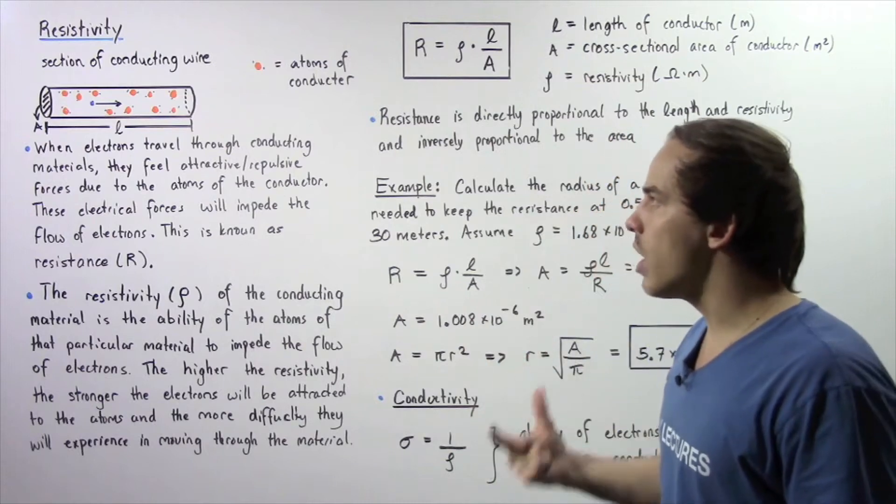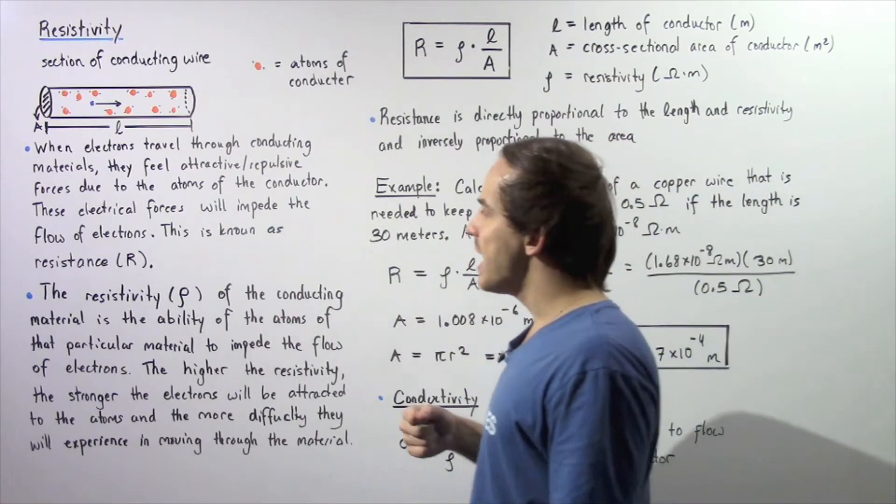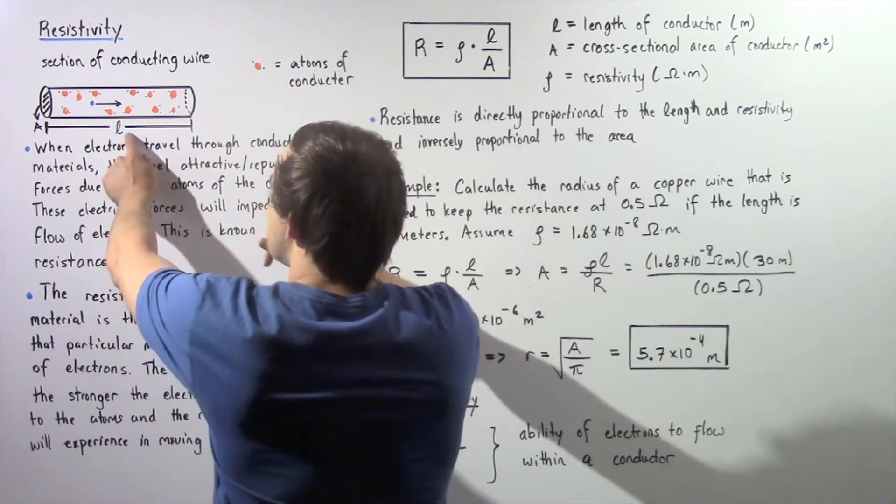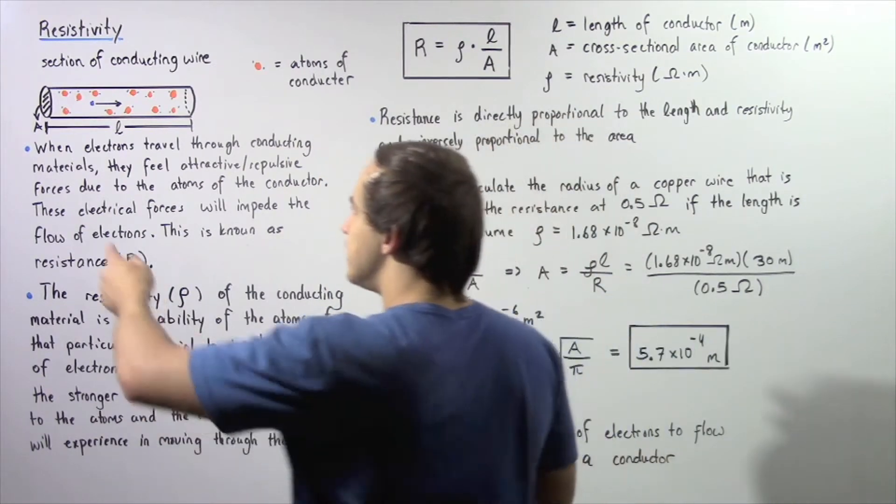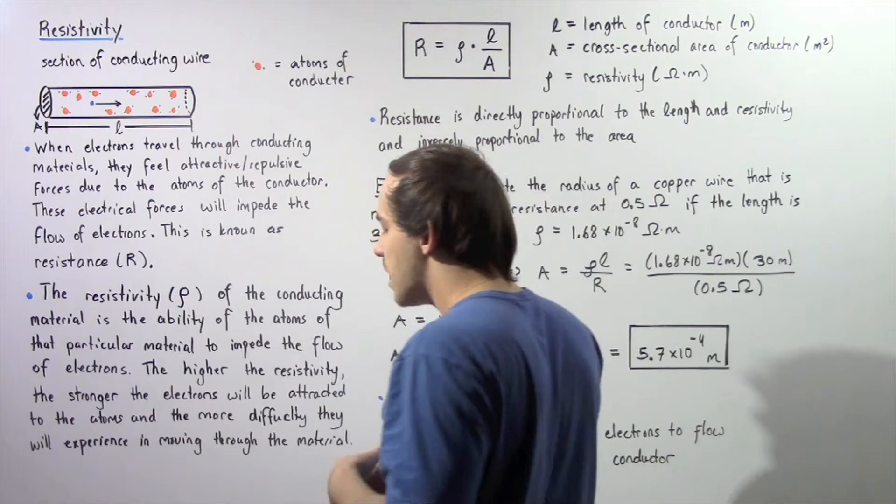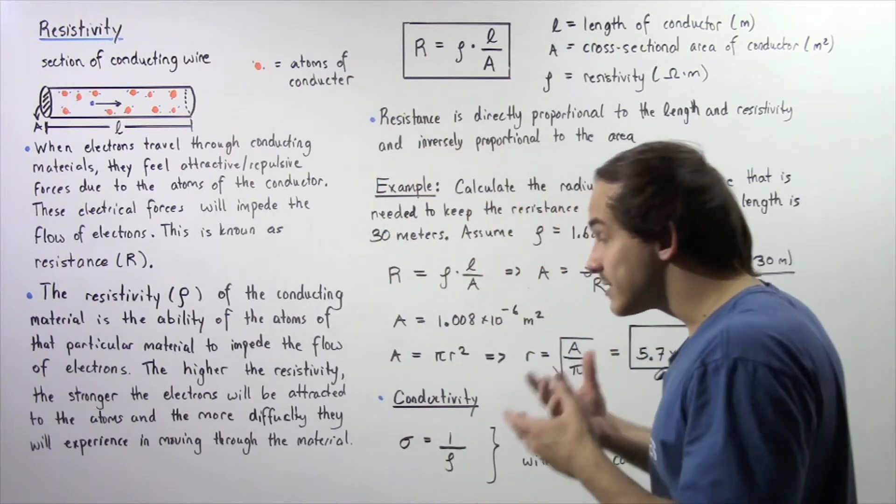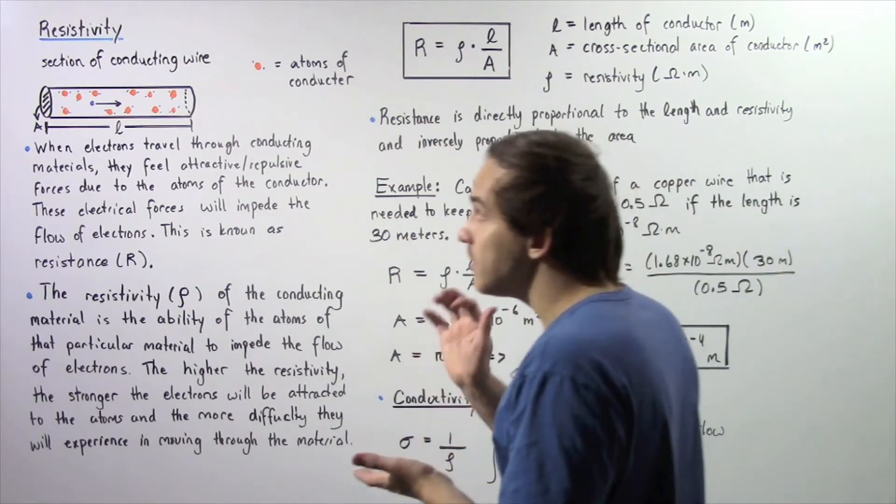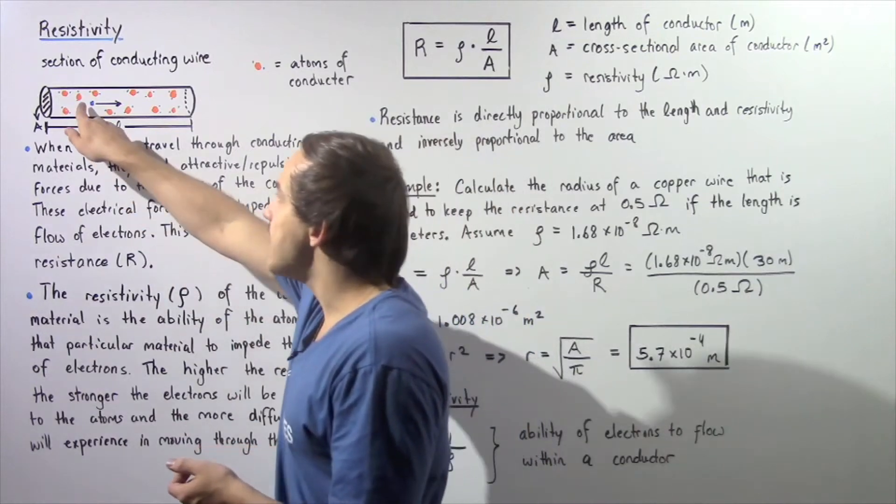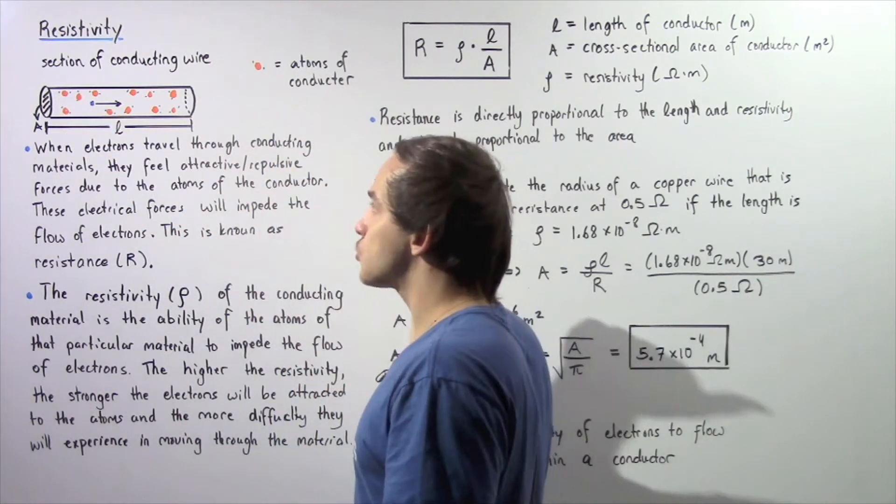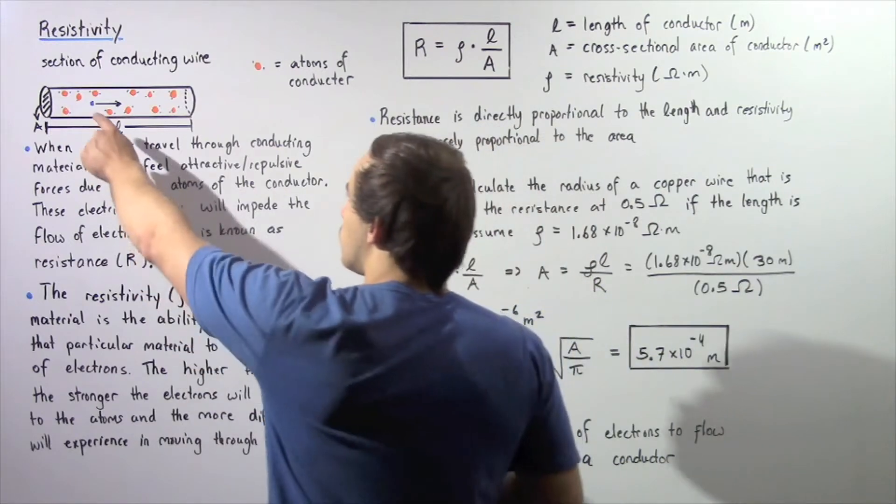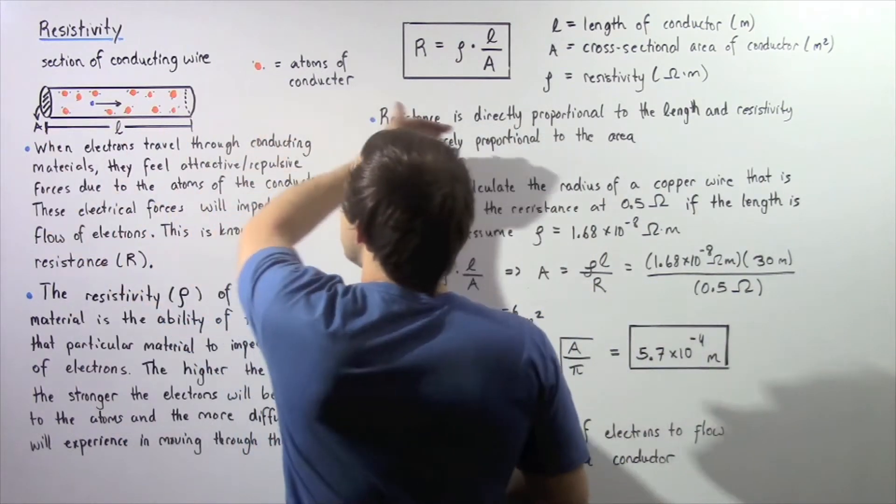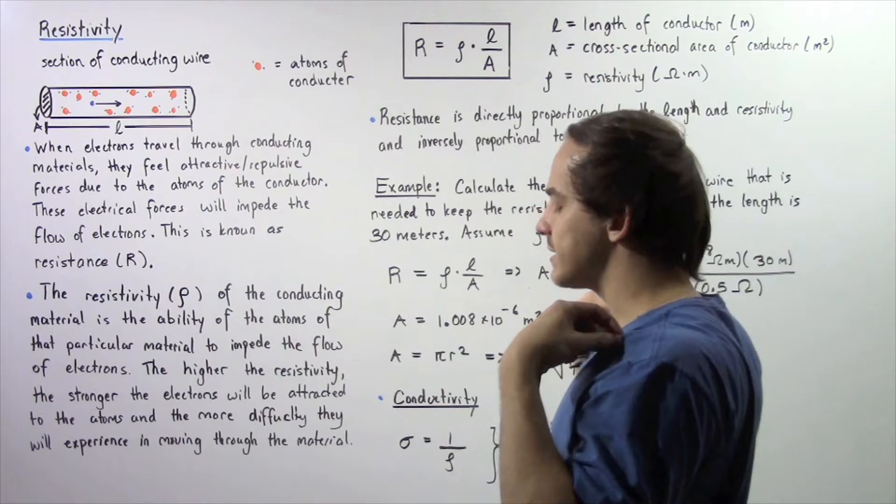Let's suppose our conducting wire is cylindrical in shape, has a total length given by lowercase l, and has a cross-sectional area given by uppercase A. Let's discuss what takes place on the microscopic level when our single electron is traveling through our conducting wire in the positive direction along our x-axis.